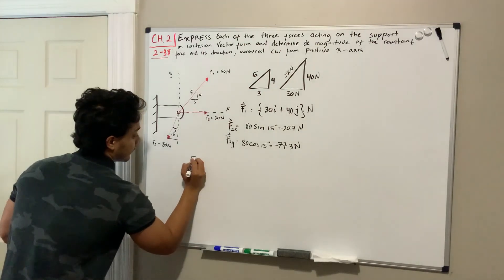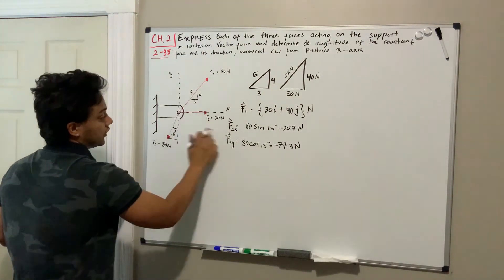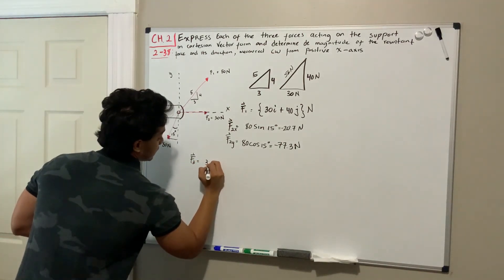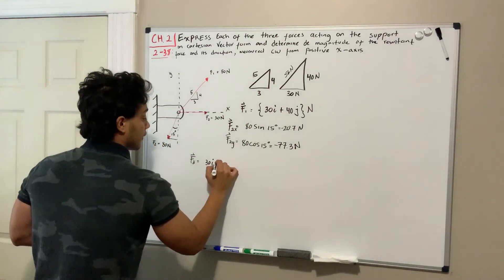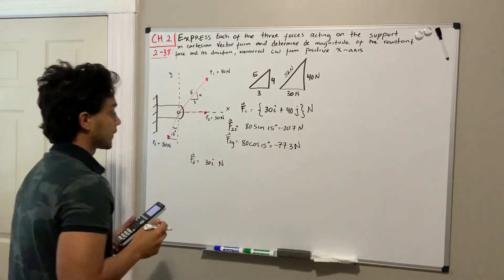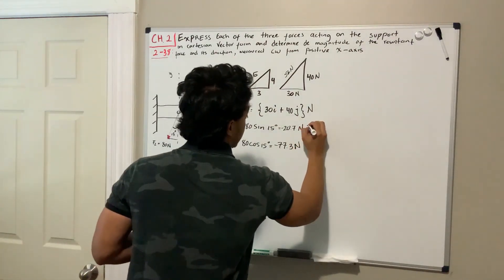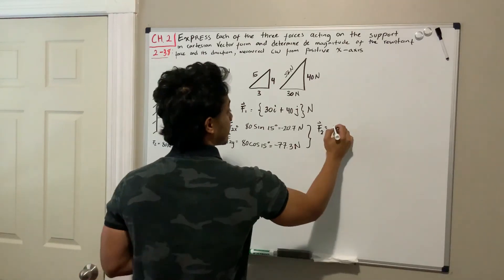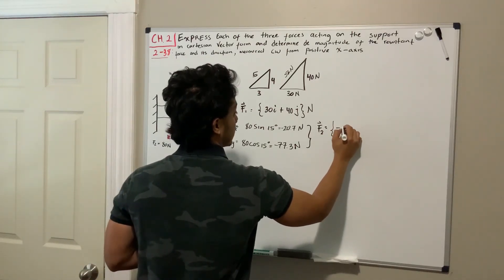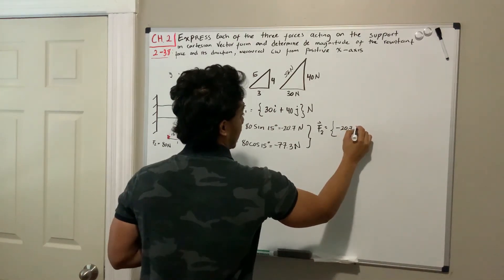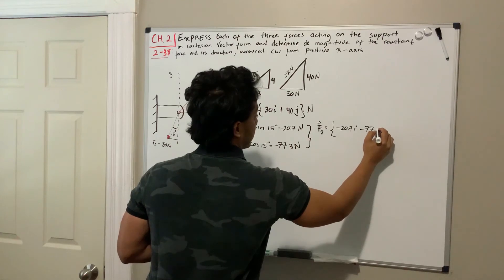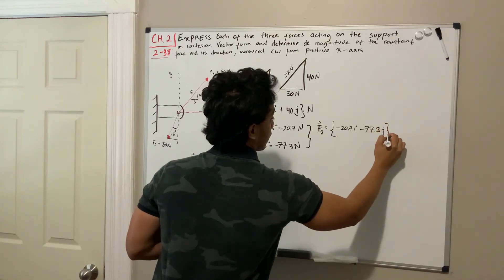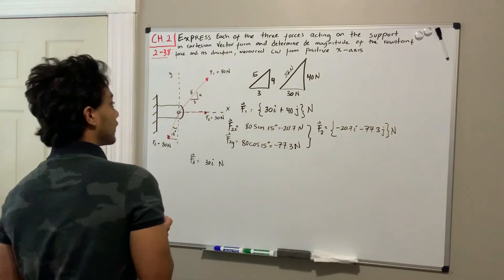The last and easiest force is F3, which is acting entirely in the x direction, so it's 30i Newtons. Now writing out F2 in full Cartesian vector form: F2 equals negative 20.7i minus 77.3j Newtons.